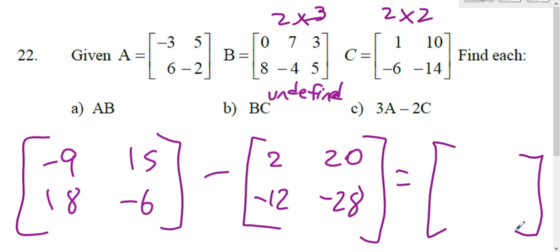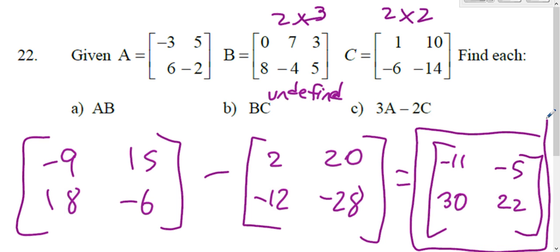So they have to be the same size. 2 by 2 and a 2 by 2. They are the same size. So just subtract their spots. Top left minus top left. Negative 9 minus 2 is negative 11. 15 minus 20 is negative 5. 18 minus negative, that's 18 plus 12, is 30. And negative 6 minus negative 28, that's negative 6 plus 28, which is 22. Box it. That's your answer.